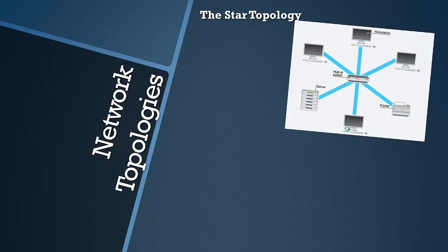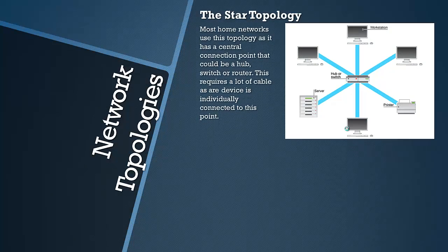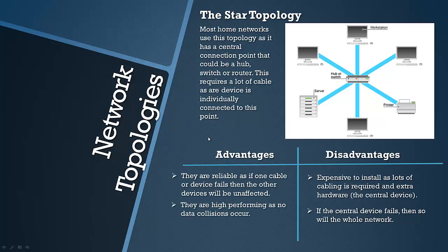Finally, we're going to look at the star topology, which is probably the most common in a home scenario — if you have many computers, laptops and phones, they'll likely be connected like this. It has a central connection point, usually a hub, switch or router, and the devices are connected individually to this central focal point rather than to each other. They're quite reliable: if one cable or device fails, only that workstation is affected — the rest of the network continues to communicate normally.